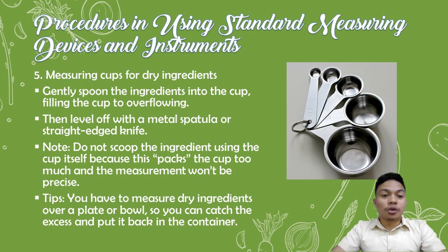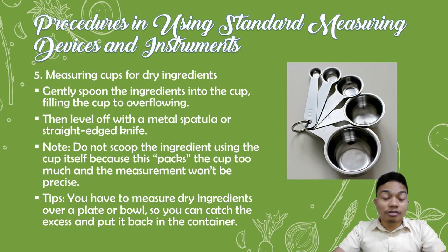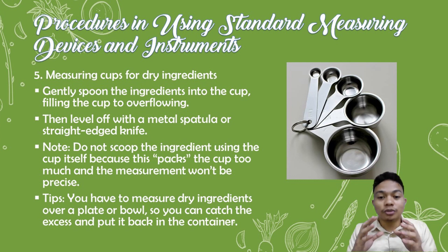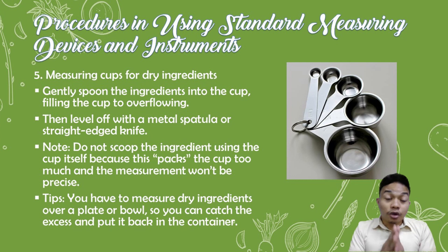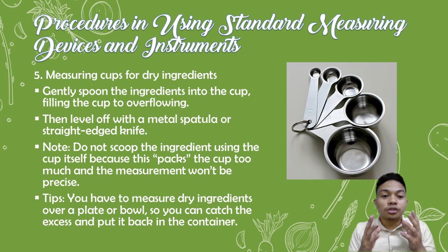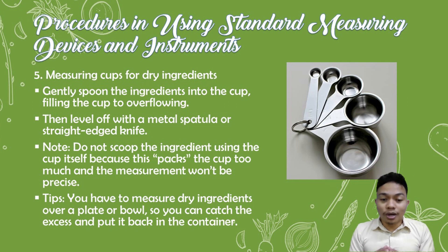How are we going to use measuring cups for dry ingredients? First, prepare the materials. Then, gently spoon the ingredients into the cup, filling it to overflow. Level off with a metal spatula or straight-edge knife. Note: do not scoop the ingredients using the cup itself because it packs the cup too much and the measurement won't be precise. Measure the ingredients over a plate or bowl so you can catch the excess and put it back in the container.